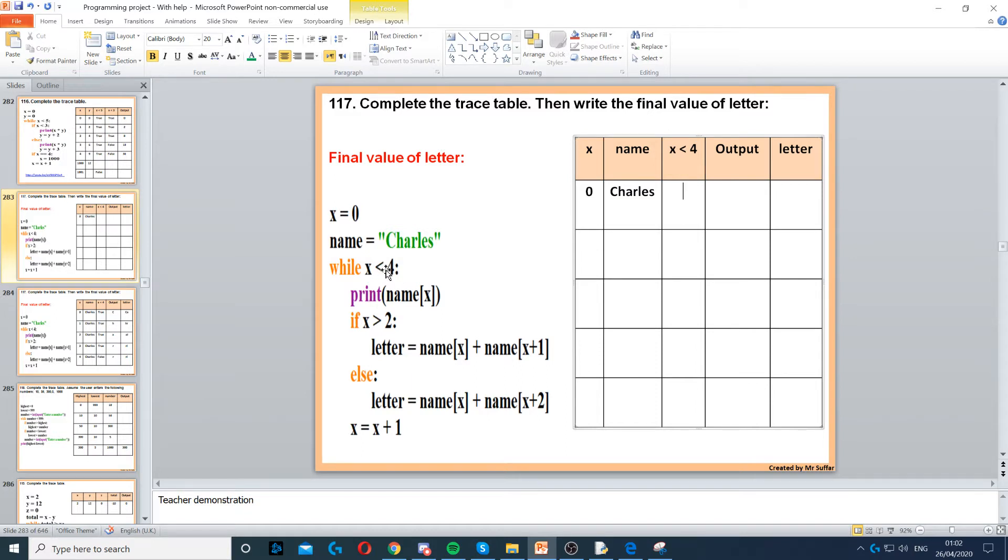Next it says while x is less than 4. So x is less than 4, 0 is less than 4, that's true. Then it says print name X, so that's the output. Name X is a substring, so it finds the part of the string. X is on position 0, so X is currently 0. Name X, the letter 0, is C. Then it says if X is greater than 2, that's false.